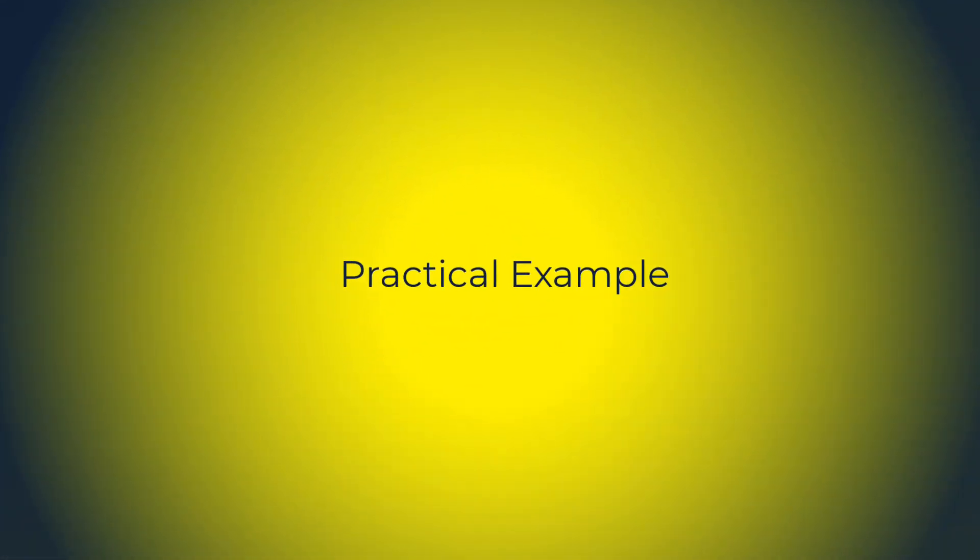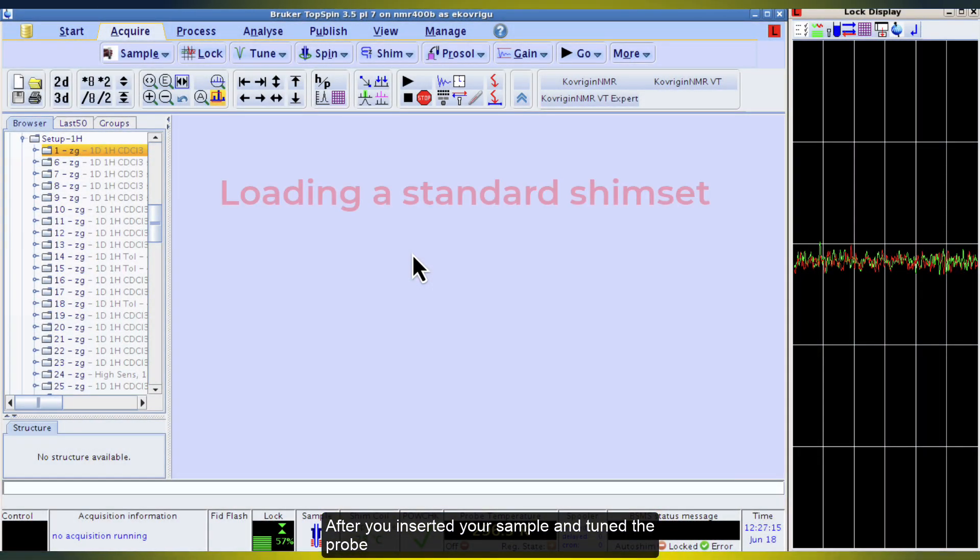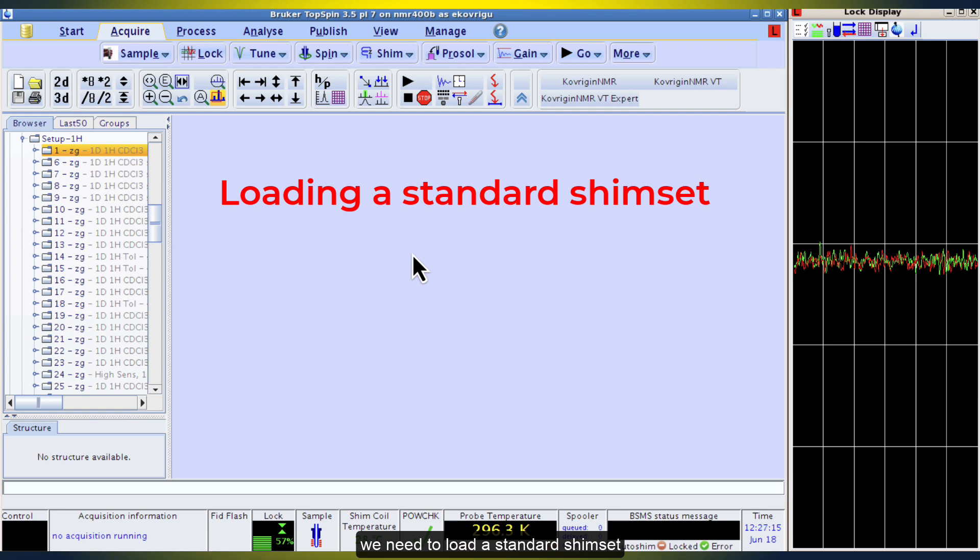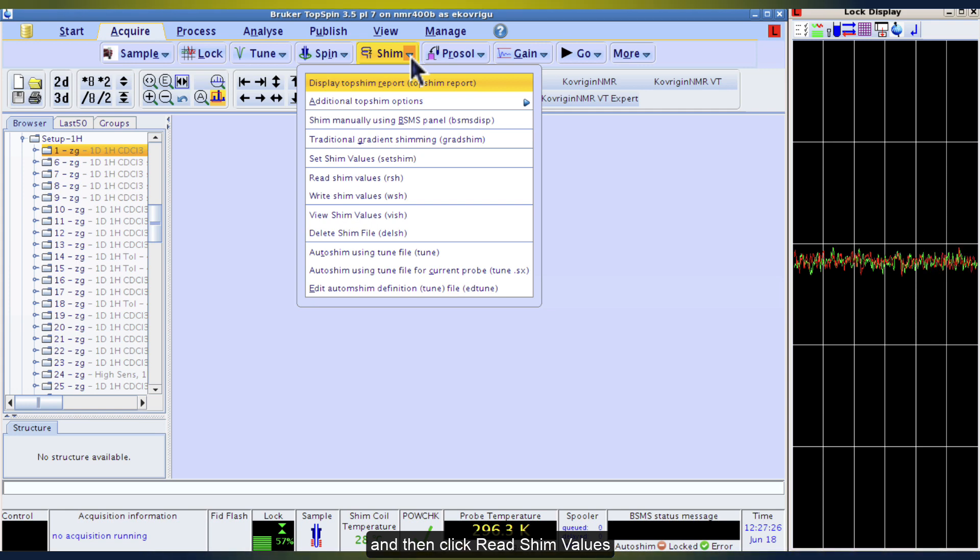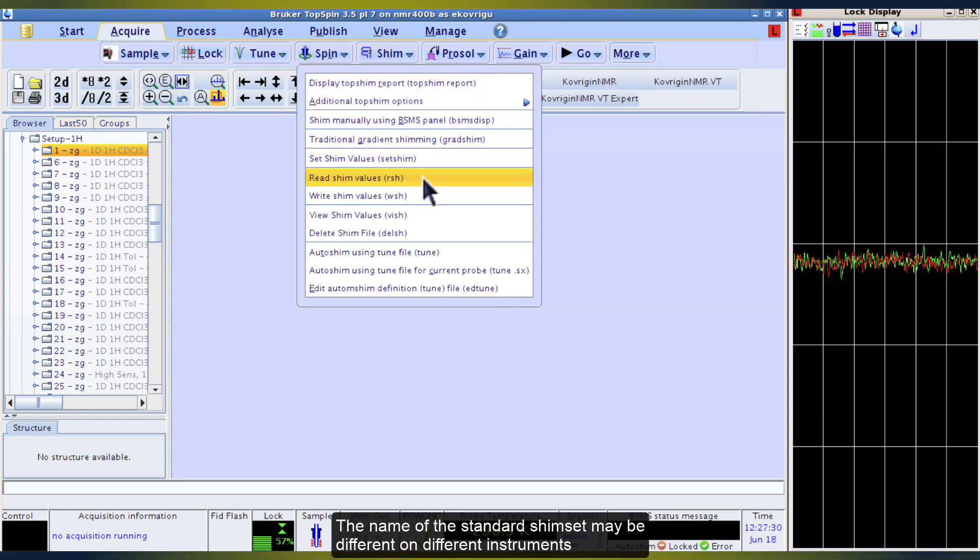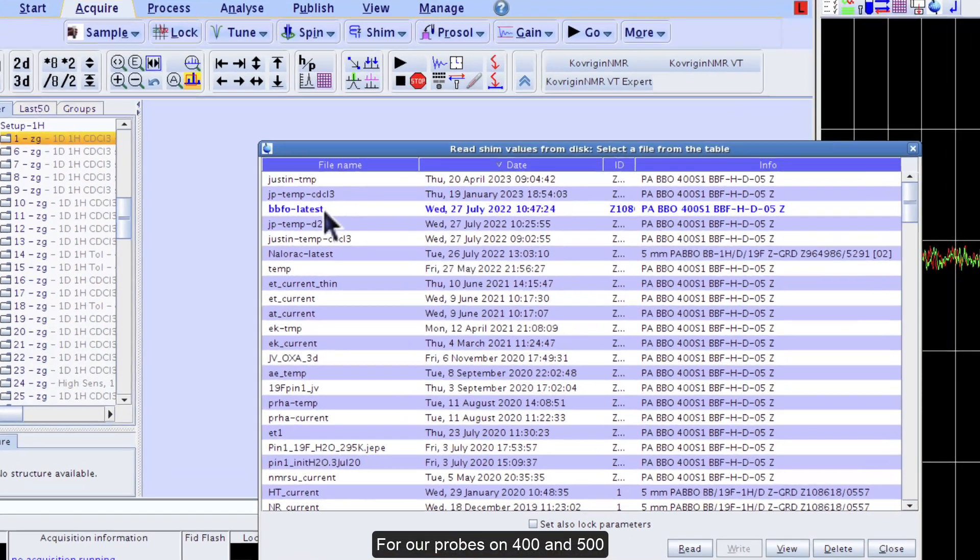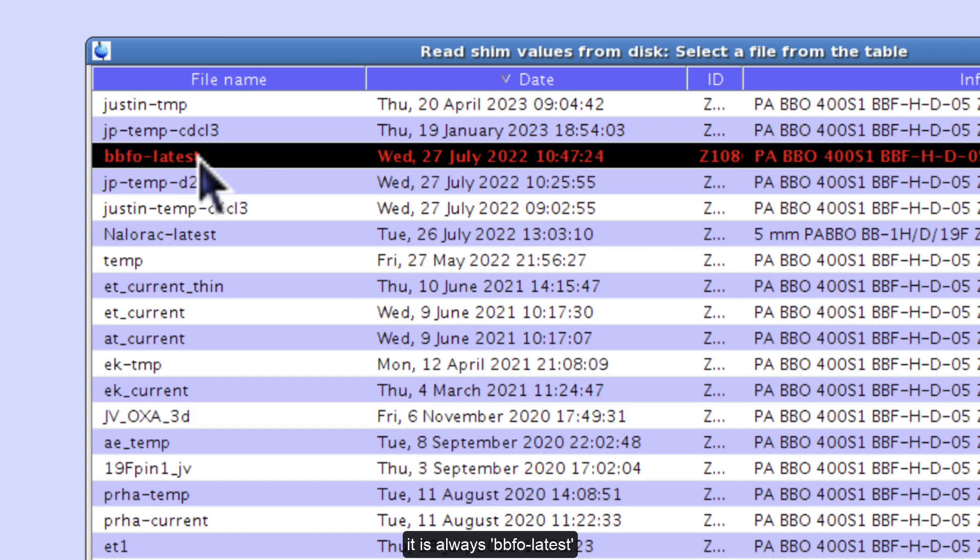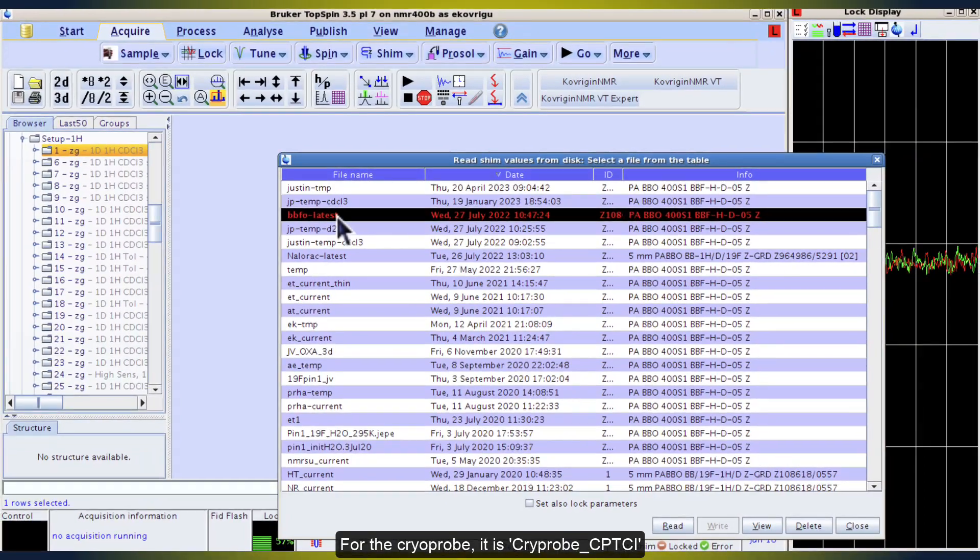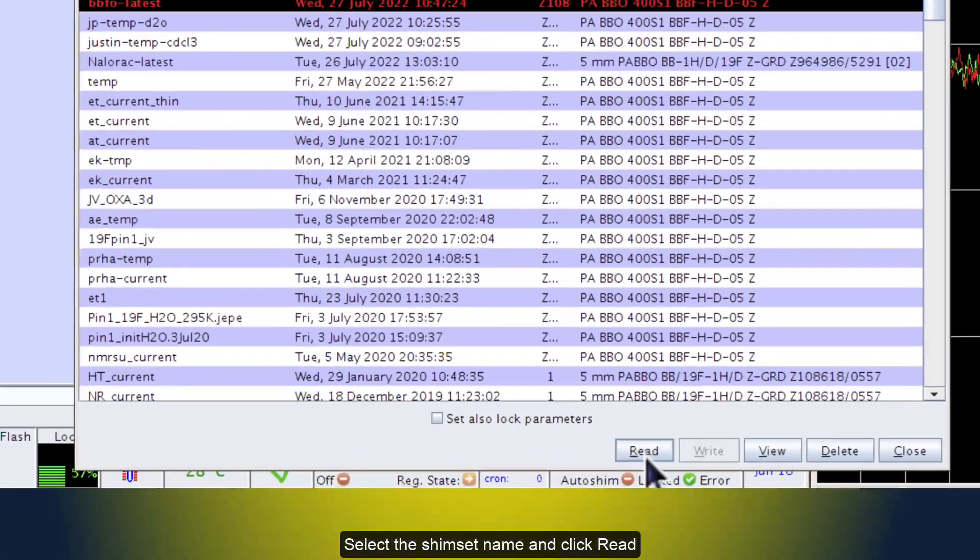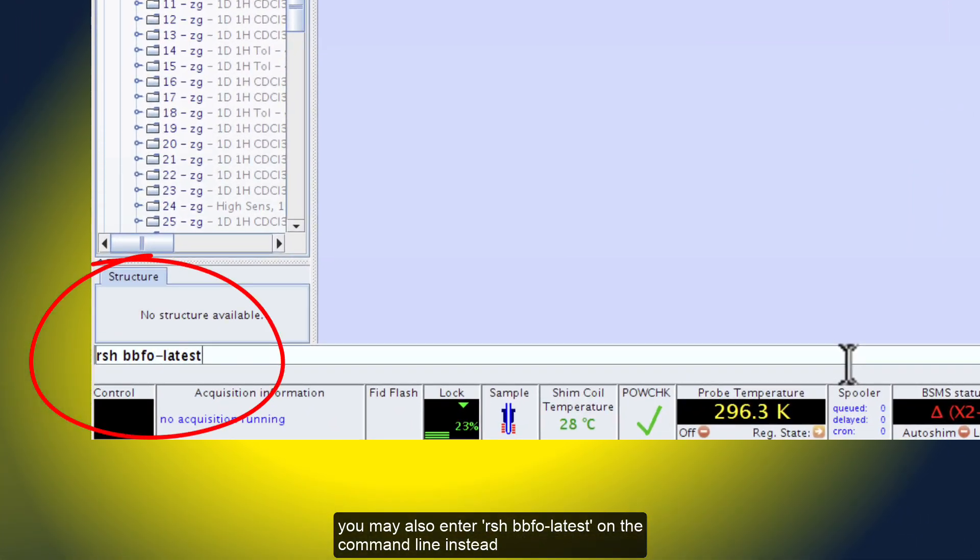Let's go through a practical shimming workflow. After you inserted your sample and tuned the probe, we need to load a standard shimset. In the Acquire tab, click arrow down next to shim and then click READ SHIM VALUES. The name of the standard shimset may be different on different spectrometers. For our probes on 400 and 500, it is always BBFO LATEST. On a cryoprobe, it is cryoprobe CPTCI. Select the shimset name and click READ. You may also enter RSH BBFO LATEST on the command line instead.